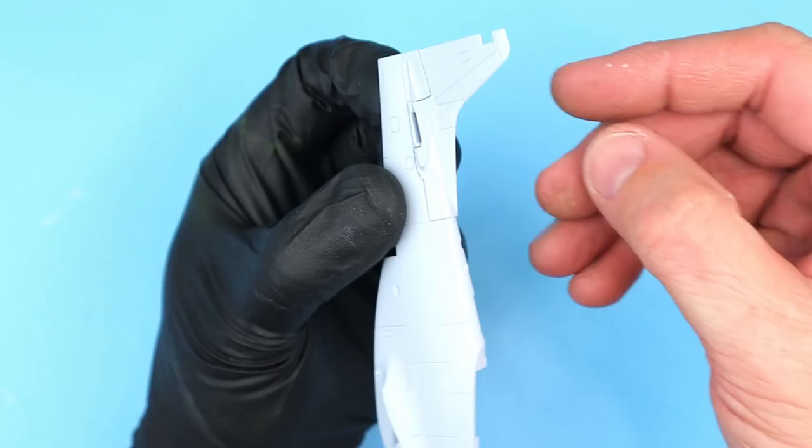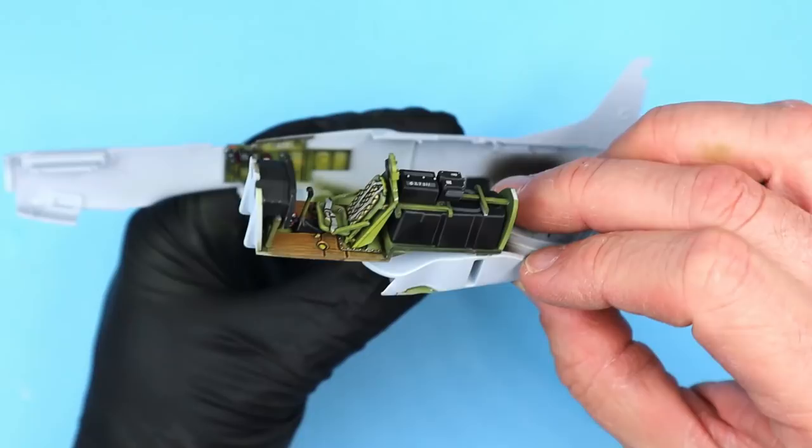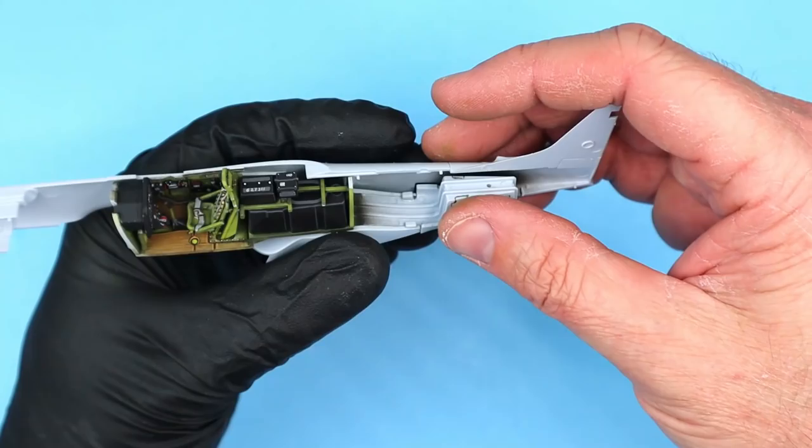Before closing up the fuselage I added the vertical stabilizer pieces to each of the halves. The fit of the cockpit sub-assembly into the fuselage halves is excellent. I really like the Airfix engineering here.